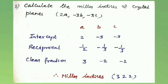The intercepts are: a is 2, b is -3, c is -3.